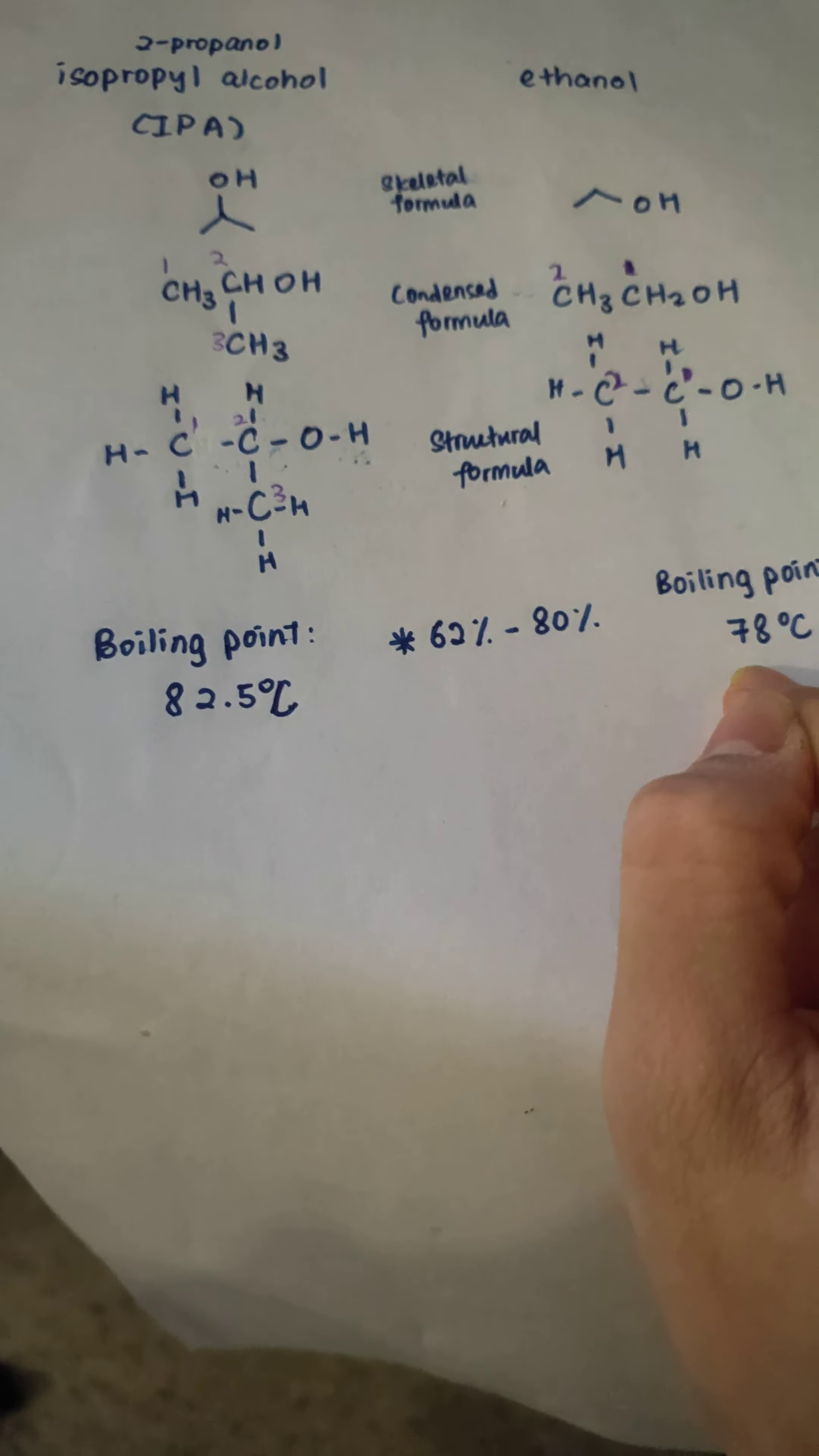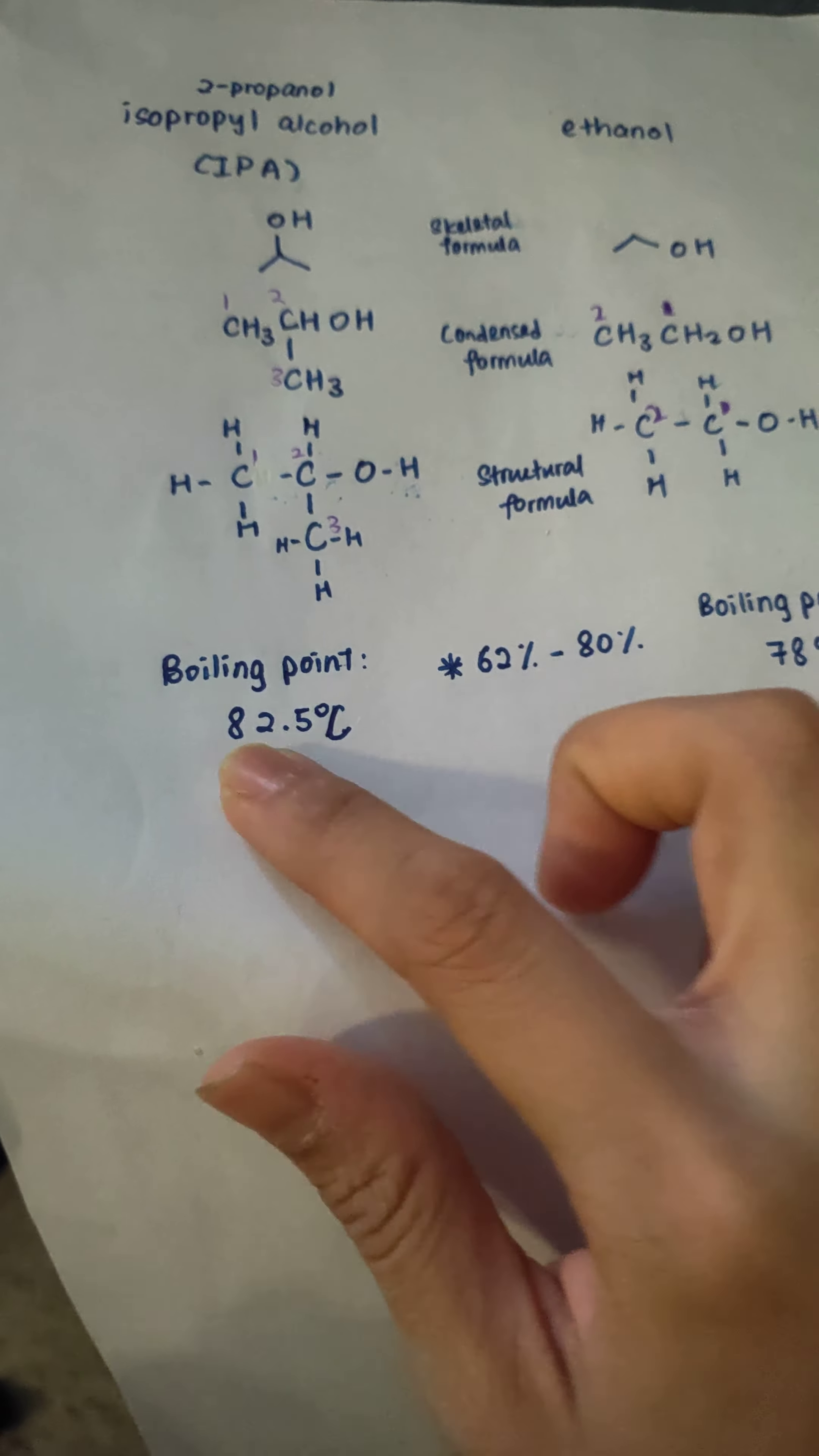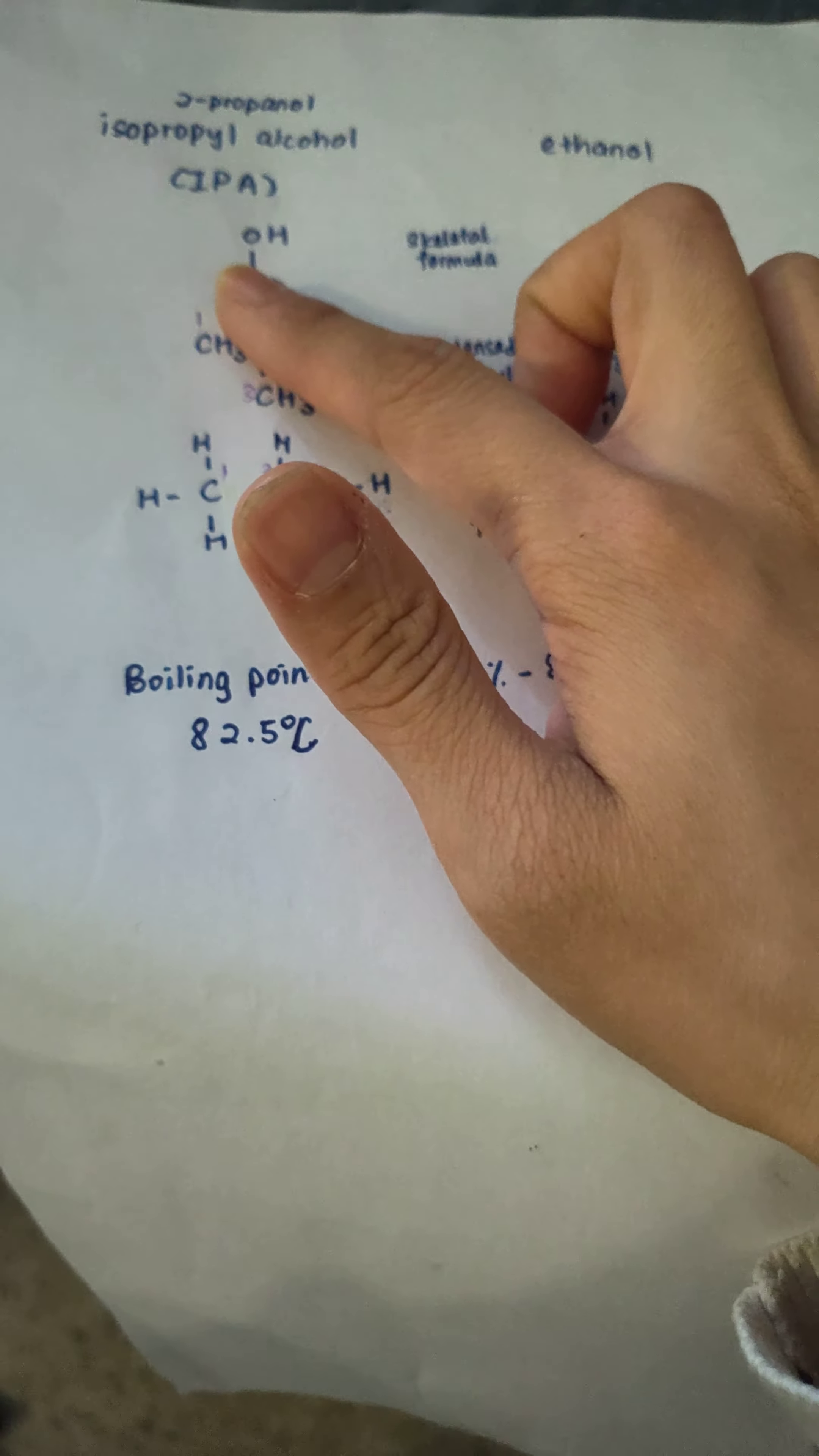So it is close to this boiling point, but it is still larger, so it needs more heat, a higher temperature to become gases. From this we can find out that ethanol will evaporate faster than IPA.